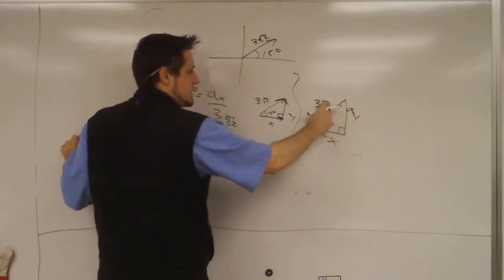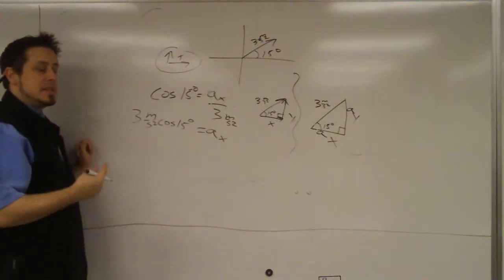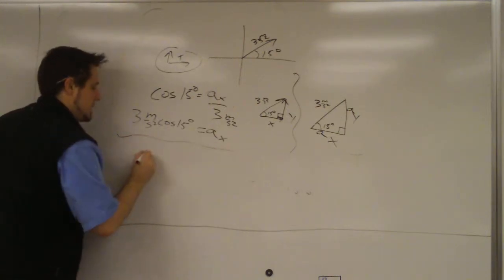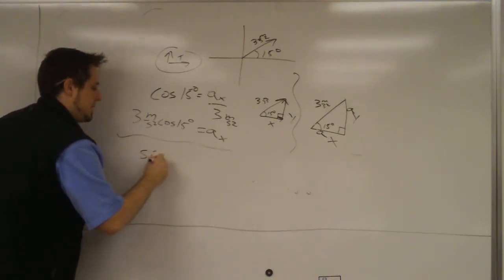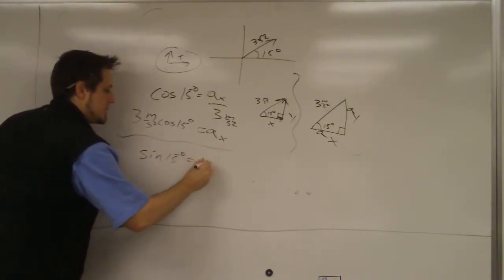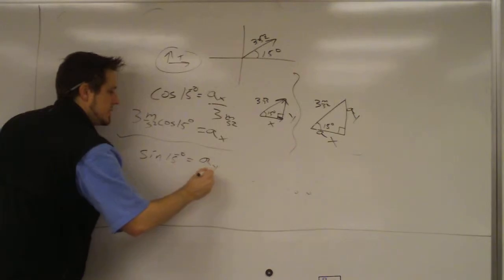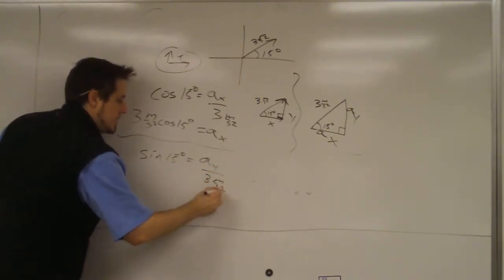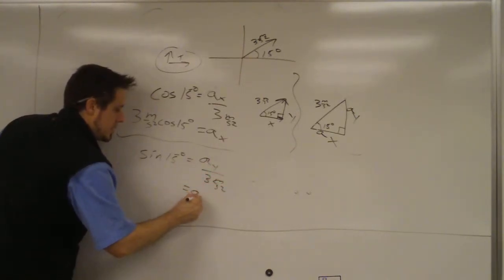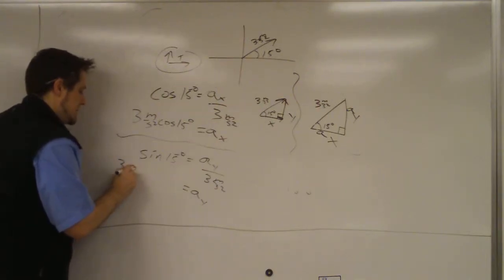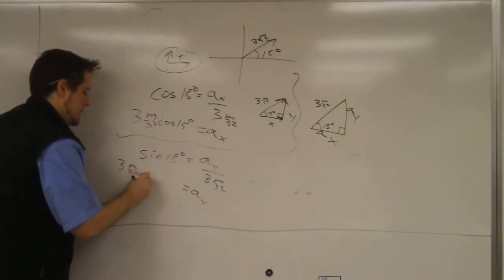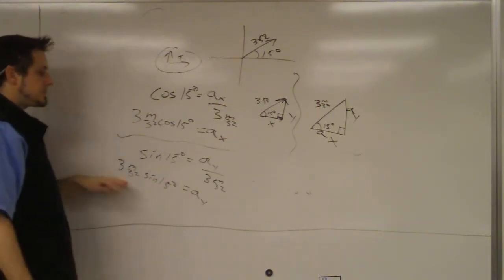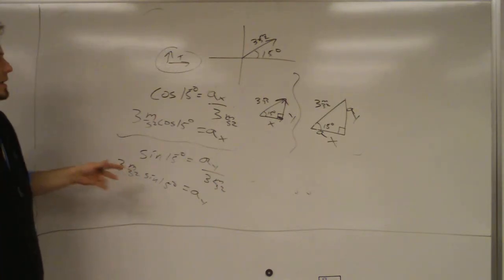For the y-component, that side is opposite the 15-degree angle, and the hypotenuse is still 3. Opposite over hypotenuse means you use sine. So sine of 15 degrees equals the opposite over the hypotenuse, giving you 3 meters per second squared times the sine of 15 degrees.